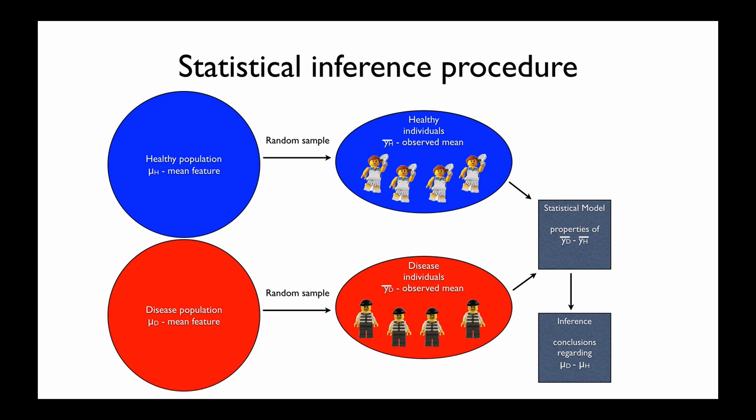The statistic itself is not good enough to make an inference from, because we know that there will always be a small difference between whatever samples we make — there will always be a difference between the observed means of two different samples. Instead, we want to make a statistical model of the difference between these: what would be reasonable to observe by chance between the difference in observed means of the two samples.